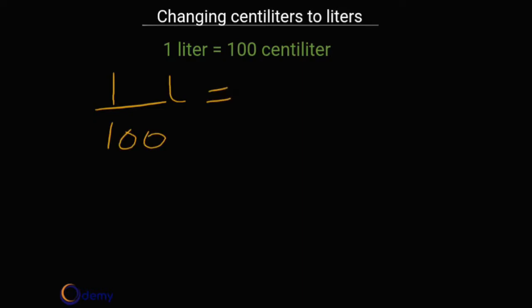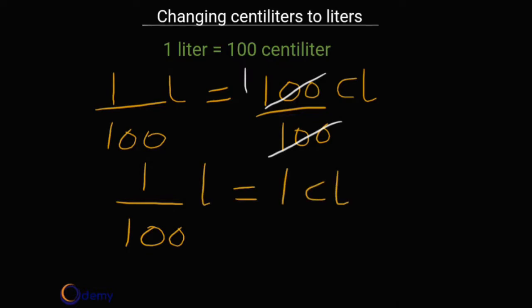And we have 100 over 100, we have centiliter as cl here. So if we cancel both sides, divided by each other, then it means 100 divided by 100 equals 1. So that means 1 over 100 liter equals 1 centiliter.